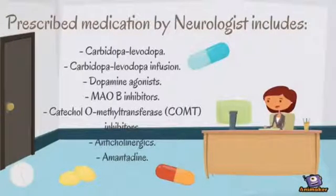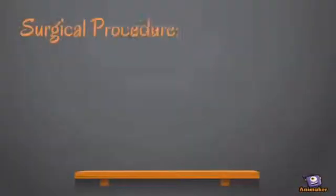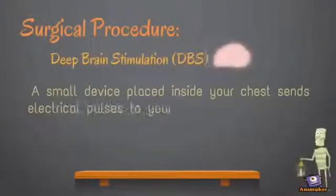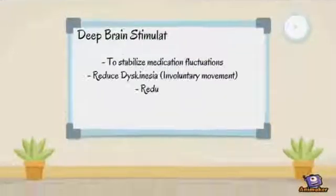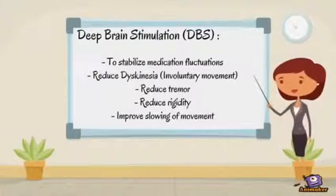In deep brain stimulation, a small device placed inside your chest sends electrical pulses to your brain. The pulses block nerve signals that cause Parkinson's symptoms. DBS can stabilize medication fluctuations, reduce involuntary movements (dyskinesia), reduce tremor, reduce rigidity, and improve slowing of movement.